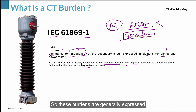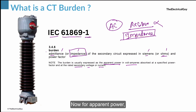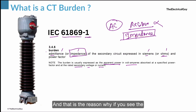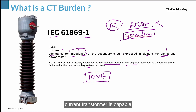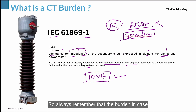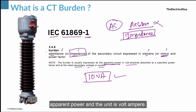These burdens are generally expressed as apparent power in volt-amperes. The unit for apparent power is VA, and that is why if you see the nameplate of a current transformer you will find something like '10 VA' written on it. That indicates that this particular current transformer is capable of delivering 10 VA. Always remember that burden in the case of instrument transformers is referred to by the apparent power and the unit is volt-ampere.